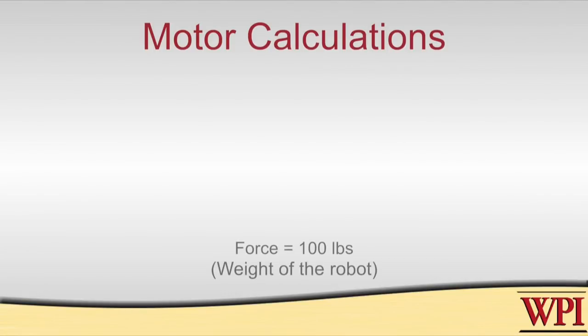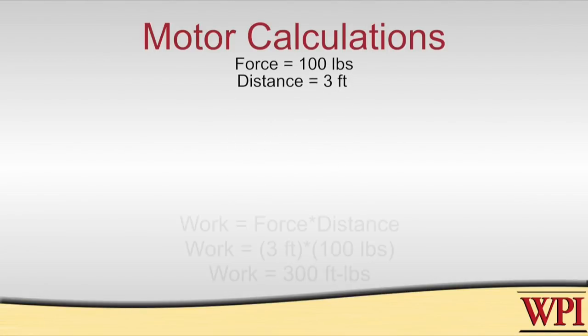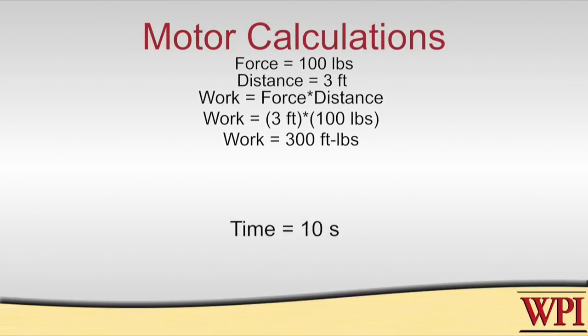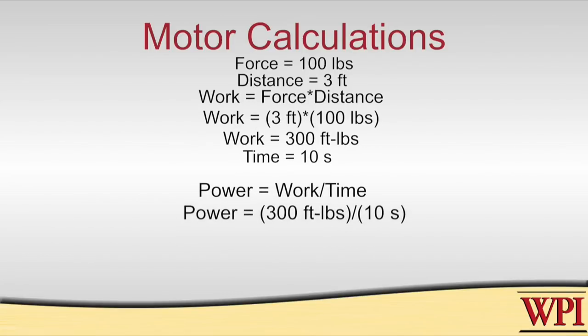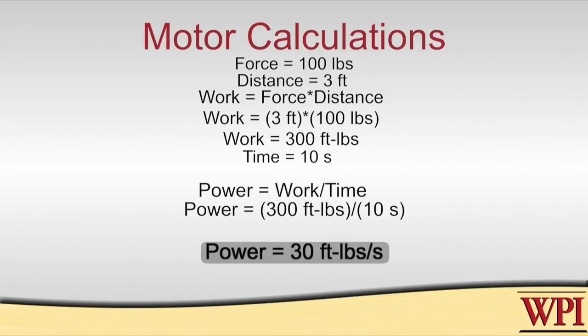Let's go on with an example. I have a robot that weighs 100 pounds and I need to lift it 3 feet in 10 seconds — we want to see how much power is required. Remembering that mechanical power is the rate at which you do work: we're talking about a 100-pound robot, 3 feet, that's 300 foot-pounds of work in 10 seconds. That works out to about 30 foot-pounds per second, which can be hard to find in a motor catalog because no one rates power that way.